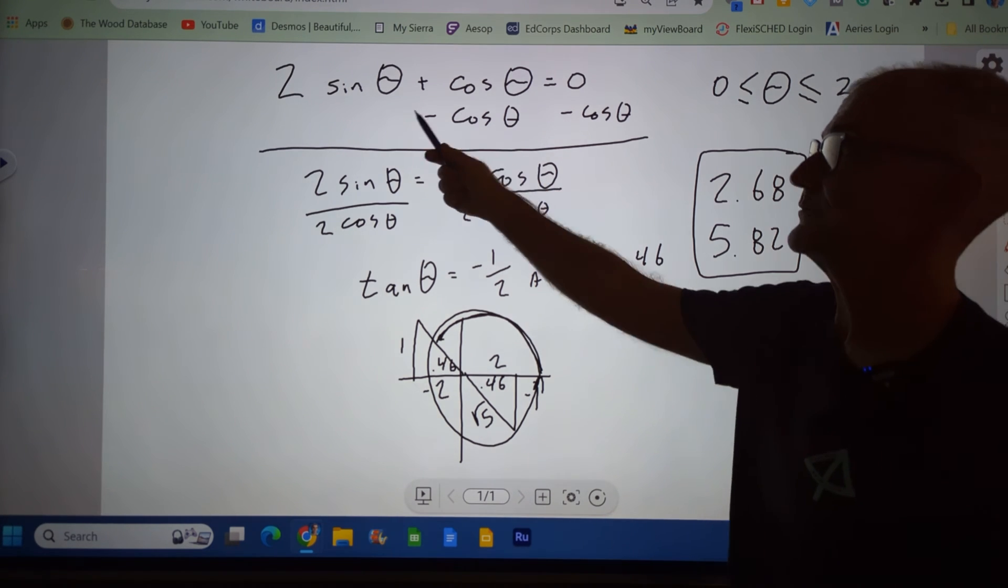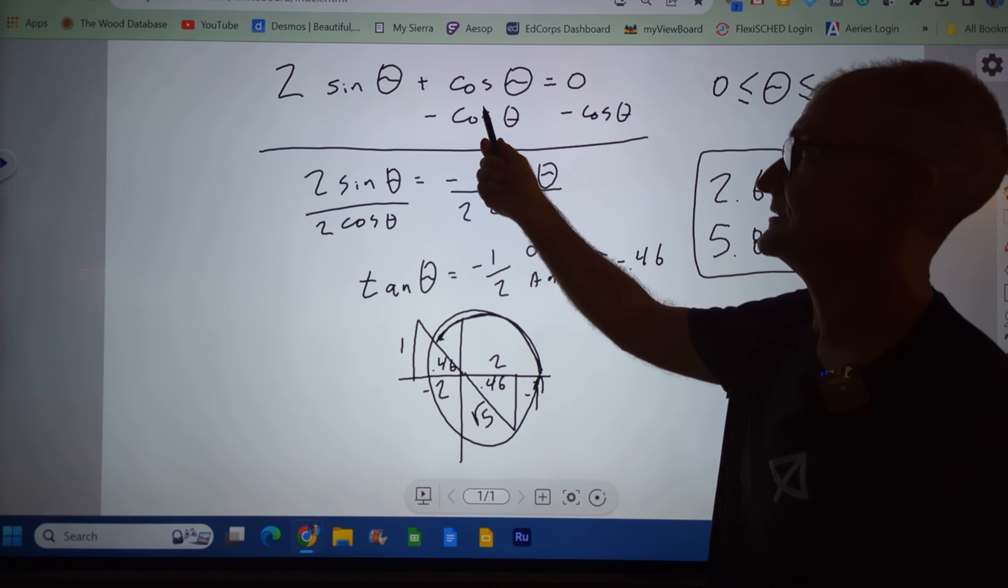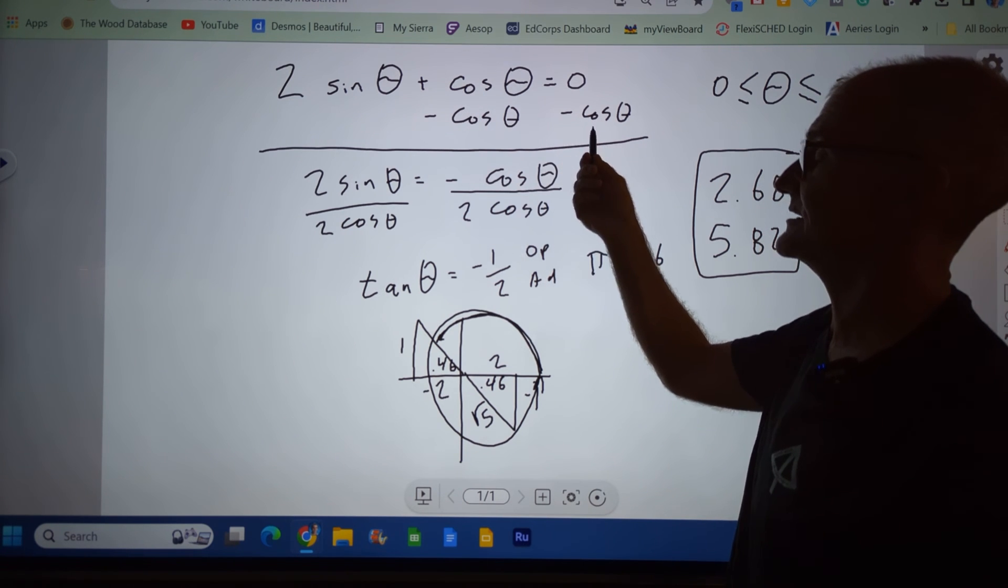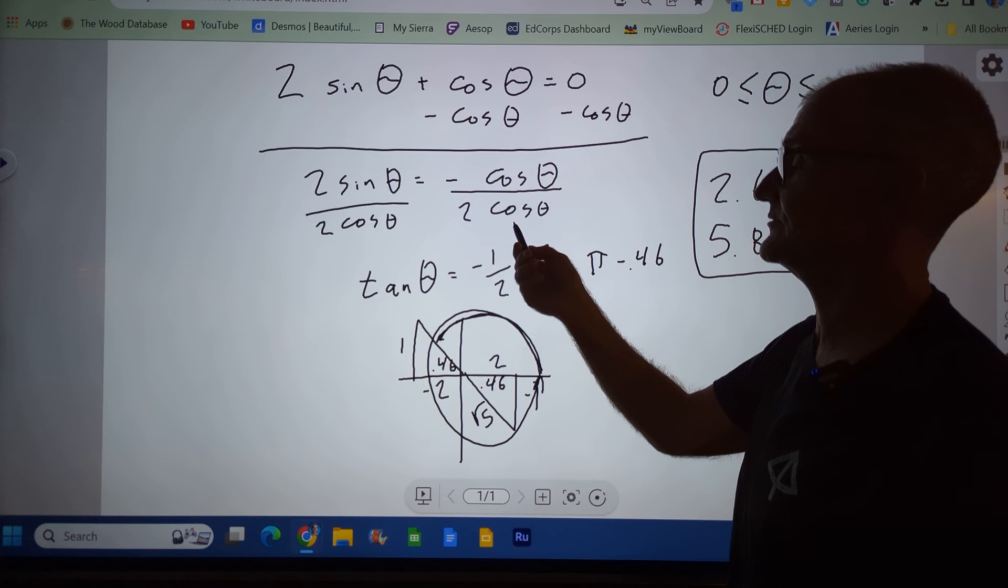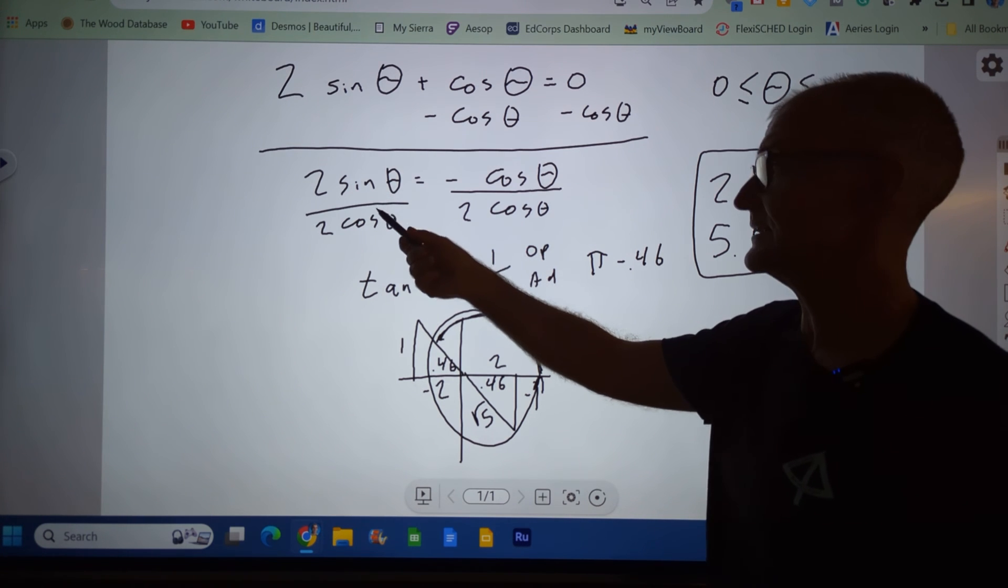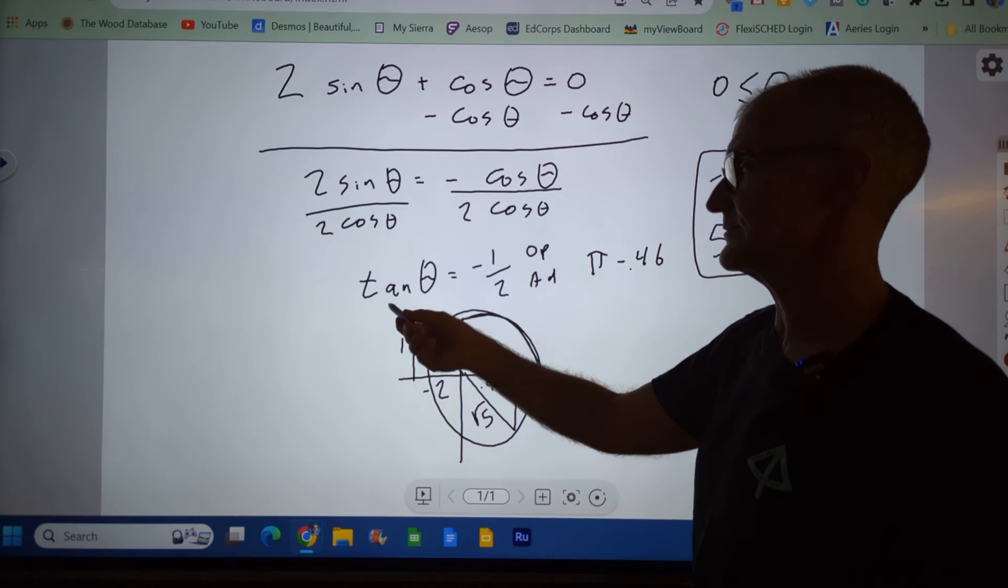So again, a quick recap. I got multiple arguments, both sine and cosine. I'm going to bring cosine over here so I could divide both sides of the equation by cosine. So I get to a quotient identity. Replace sine over cosine with tangent.